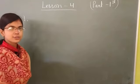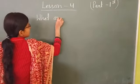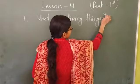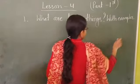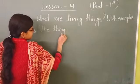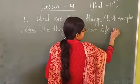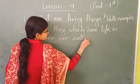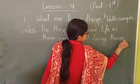Now today we have two questions. First question: What are living things, with example? The answer is: The things which have life in them are called living things. For example — humans, animals, and plants.